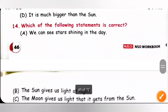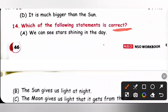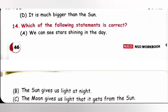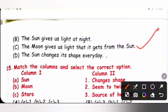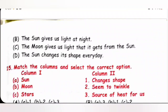Question 14: Which of the following statements is correct? Option A — we can see stars shining in the day: incorrect, we see stars at night. Option B — the sun gives us light at night: incorrect, the sun gives light in daytime. Option C — the moon gives us light that it gets from the sun: correct. Option D — the sun changes its shape every day: incorrect, the moon changes its shape. So option C is the correct answer.